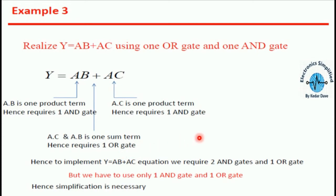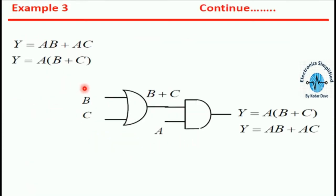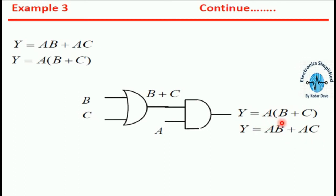By using these gates you will definitely get the equation shown in the example. Two AND gates and one OR gate are used, and the result is y = ab + ac. It's equivalent to y = a(b + c), but ultimately it is nothing but ab + ac. That is the perfect example of using logic gate circuits with a Boolean equation.